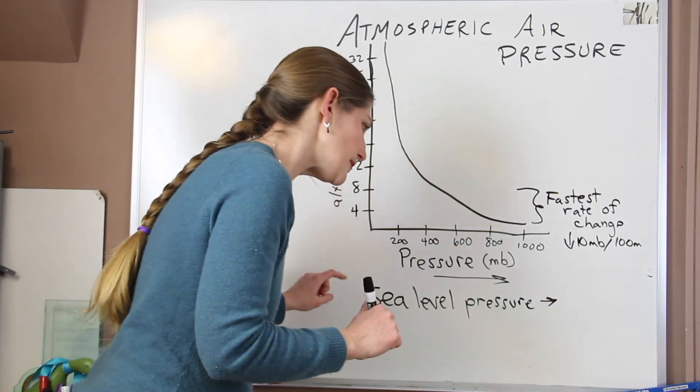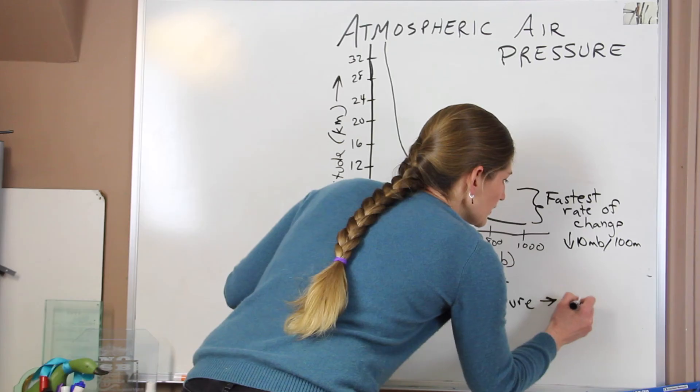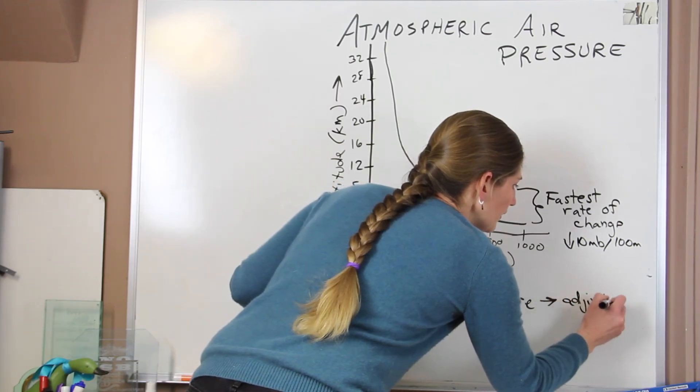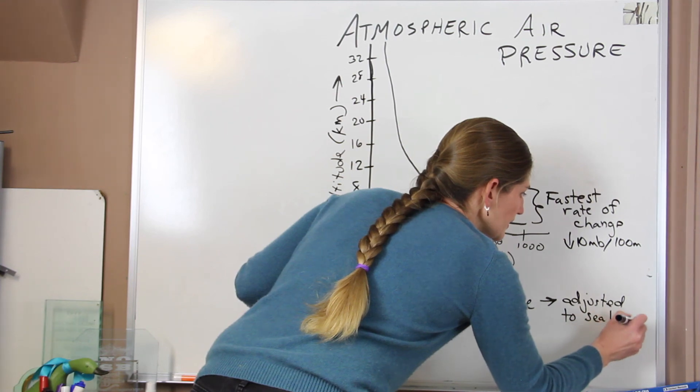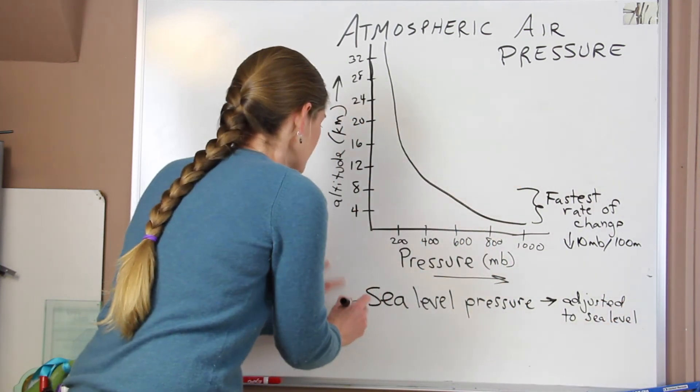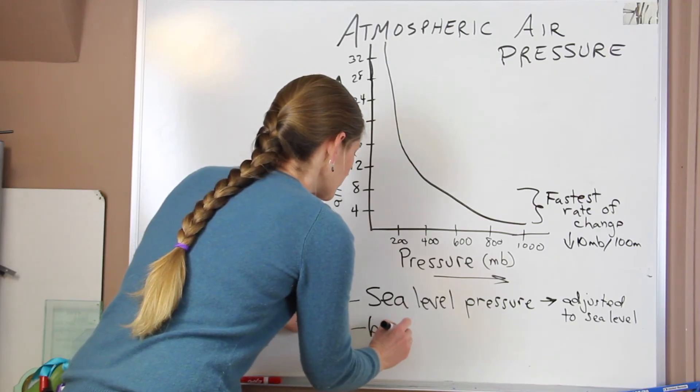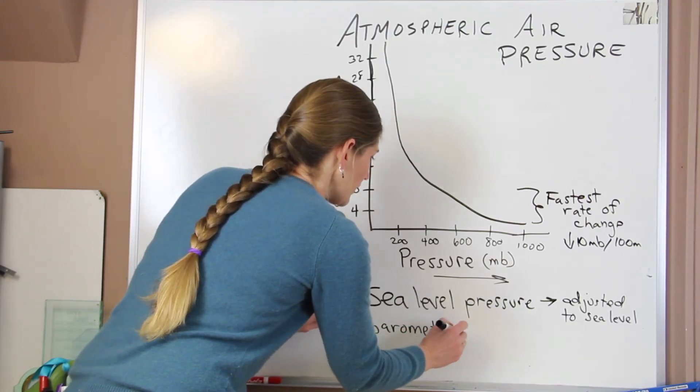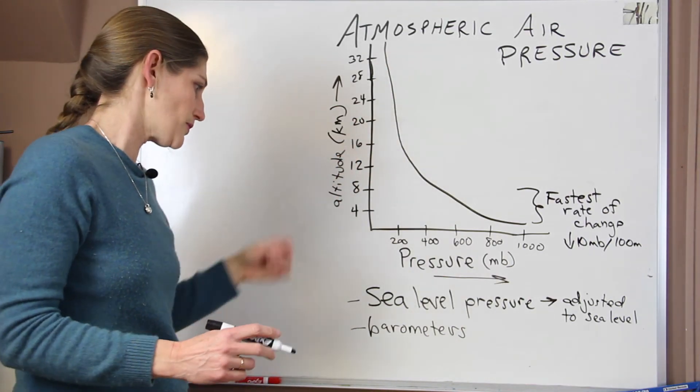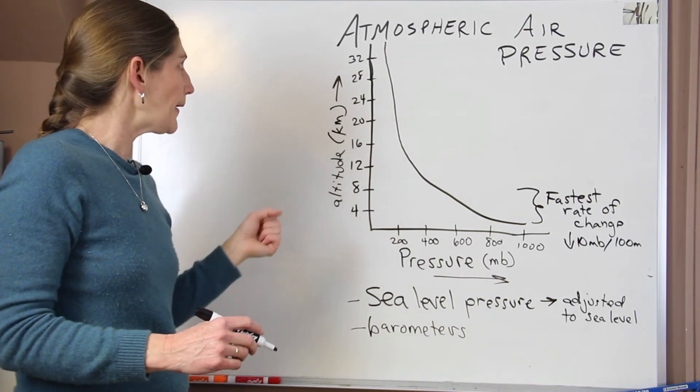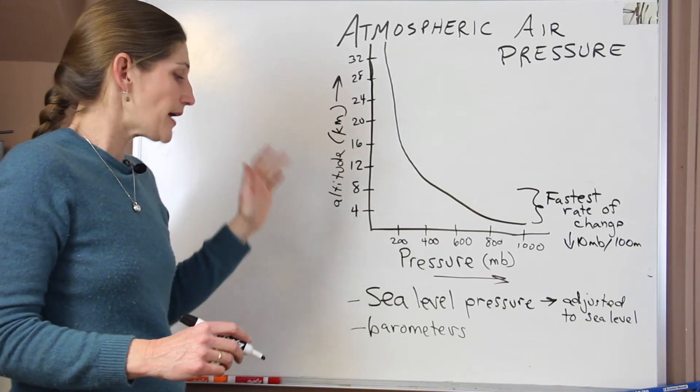So let's see, what do we want to do? Yeah, this is the adjusted sea level, and we can do our comparisons. And then the last thing if you're just needing to remember, we use barometers to measure our air pressure. So sometimes they call it the barometric pressure. So just a couple things to think about when you're thinking about changes related to air pressure in the atmosphere.